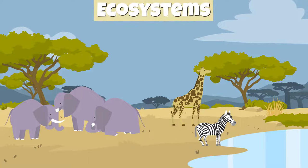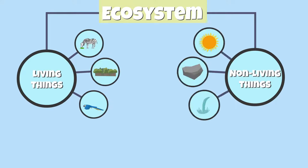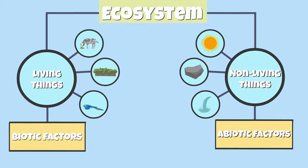Did you know that living organisms interact with each other and with non-living things in an ecosystem? An ecosystem is made up of both living and non-living things, or what biologists refer to as biotic and abiotic factors.